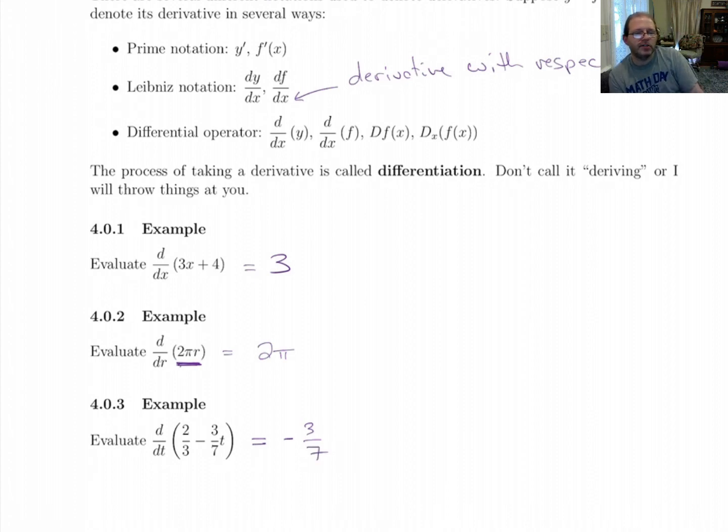The Leibniz notation is useful when you've got variables that are unusual or if you want to be very explicit about what you're taking the derivative with respect to.